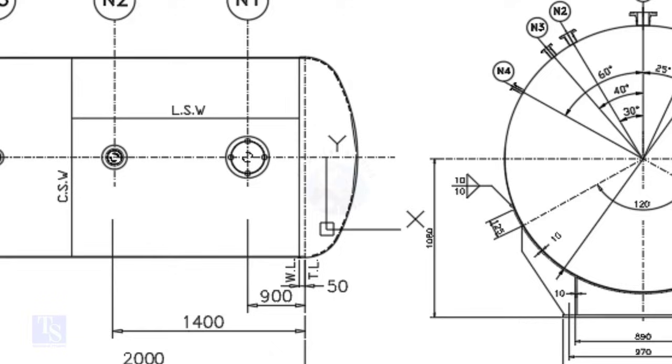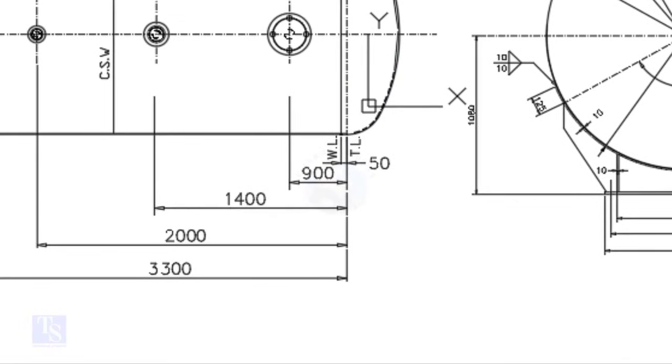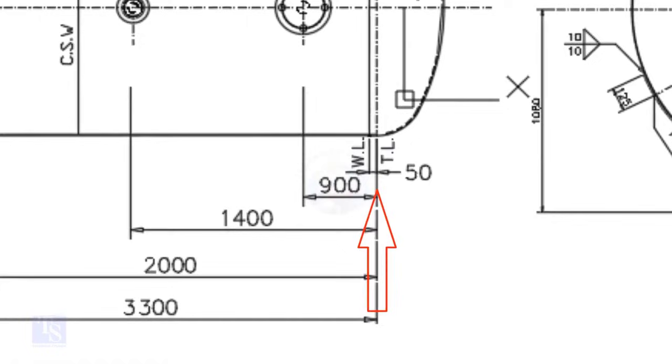In this drawing, the nozzle center distance is measured from the TL. But in some drawings, you may see the nozzle center given from the WL. So, before starting the marking, always check these details carefully.